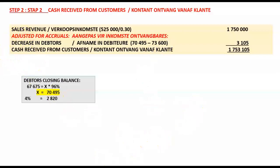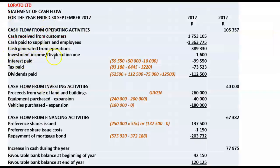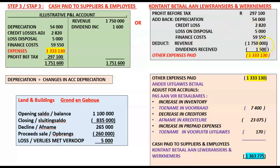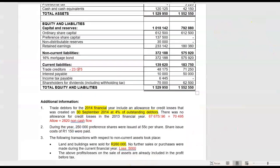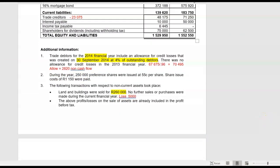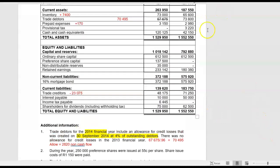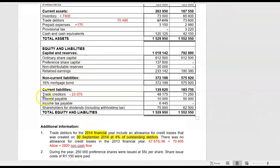Good. The next item is our interest paid. Let's do dividend income first — dividend income, straightforward. There's nothing unusual about dividend income; it's also equal to 1,600. Now interest: in our statement of financial position we have interest payable of 10,000 at the end of this year and 50,000 at the beginning of the year.